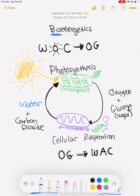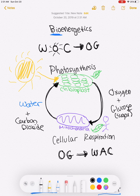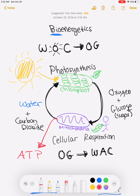For cellular respiration, that oxygen and glucose goes into the mitochondria — this can happen in a leaf because plants do both, but humans do it too. We take oxygen and glucose into the mitochondria and produce water, carbon dioxide, and something called ATP — adenosine triphosphate.